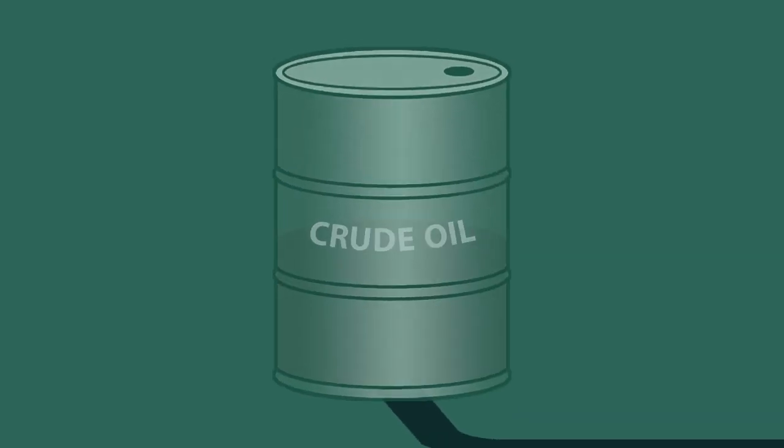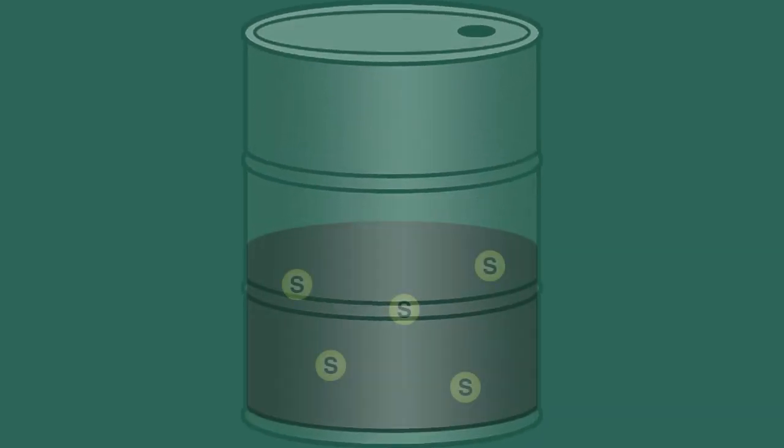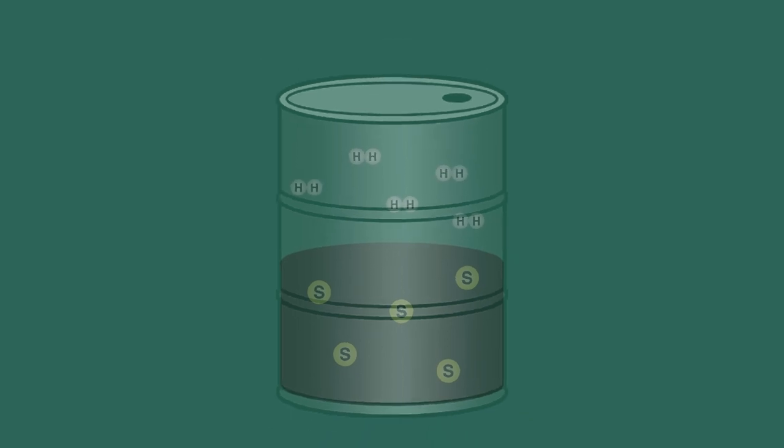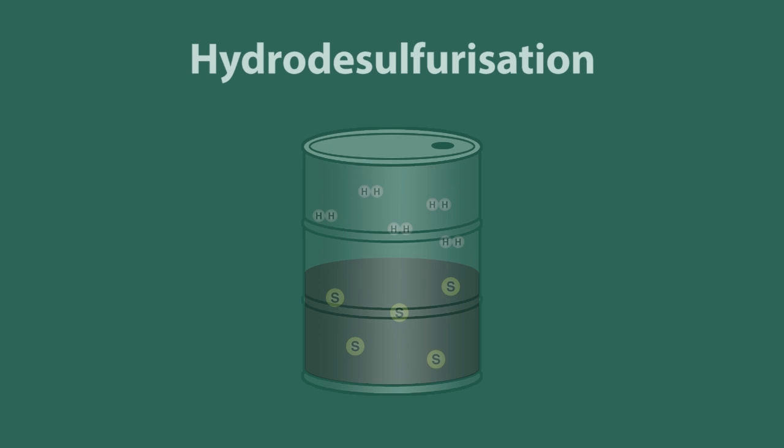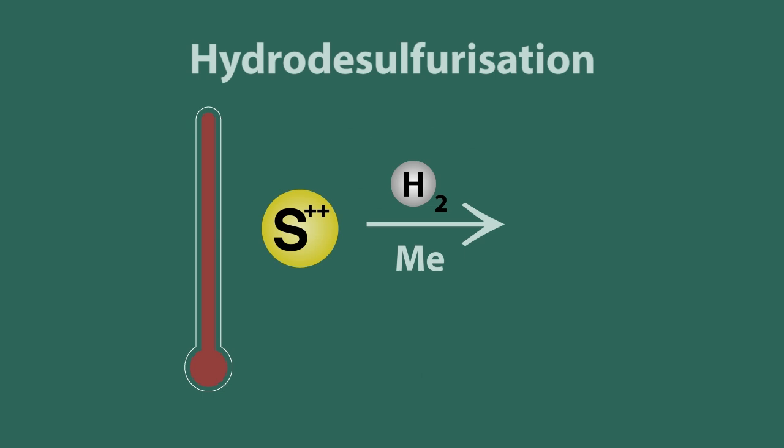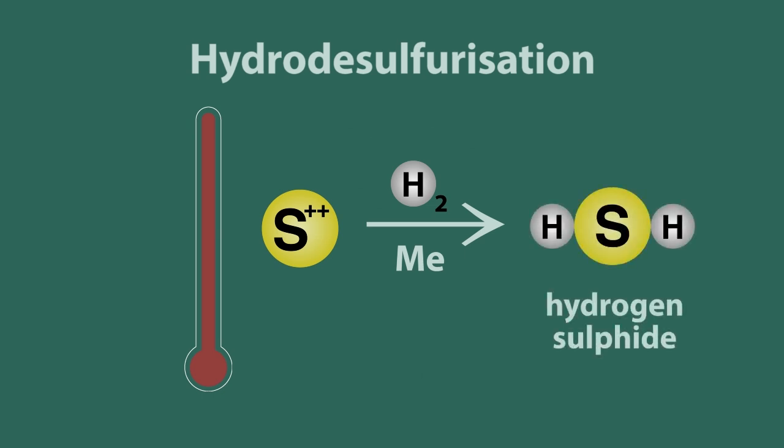In oil refineries, sulfur is removed from crude oil by reacting it with hydrogen. This reaction, known in industry as hydro-desulfurization, takes place at high temperature with a metal catalyst to produce hydrogen sulfide, that bad egg smell and a very poisonous gas.